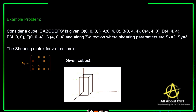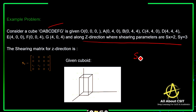To calculate the new coordinates for shearing transformation in the Z direction, Z remains unchanged, and Xn equals Sx times Z-naught, Yn equals Sy times Z-naught. Now let's apply these formulas on a problem. Consider a cube with vertices O, A, B, C, D, F, G, H. We have to perform shearing along the Z direction where shearing parameters Sx equals 2 and Sy equals 3. The Z coordinates all remain the same — only X and Y coordinates change.